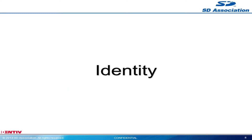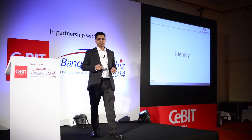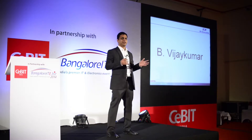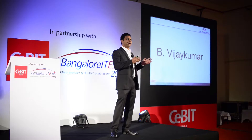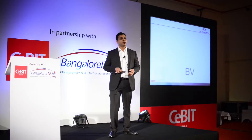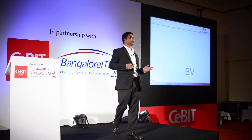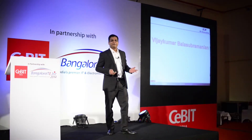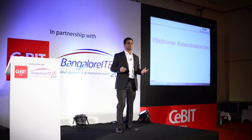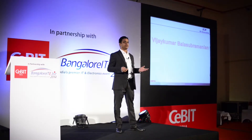I want to talk a little bit about identity — this is very personal to me. When I left India, my name was B. Vijay Kumar. In Tamil Nadu we don't have last names, so I had my father's first initial as my initial. My friends knew me as B.V. because every class had multiple Vijaykumars. When I went to the US, I was forced to have a last name. I applied for my driver's license with the California DMV, and the clerk joked he was going to find me because I was taking up all the spaces in the form.